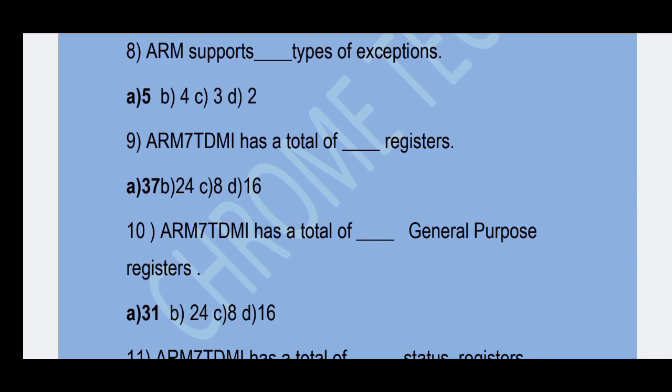Next question: The ARM7TDMI has a total of how many registers? 37 is the correct answer. How many general purpose registers? Option A — 31 is the correct answer.